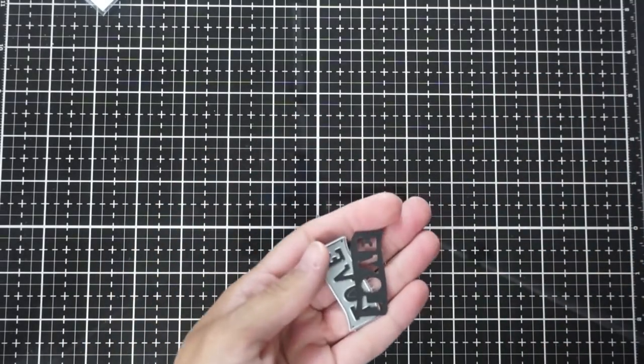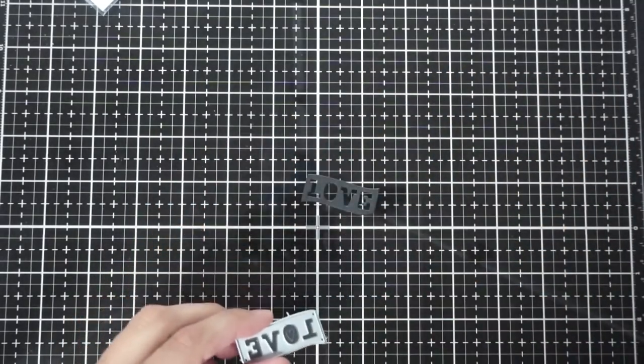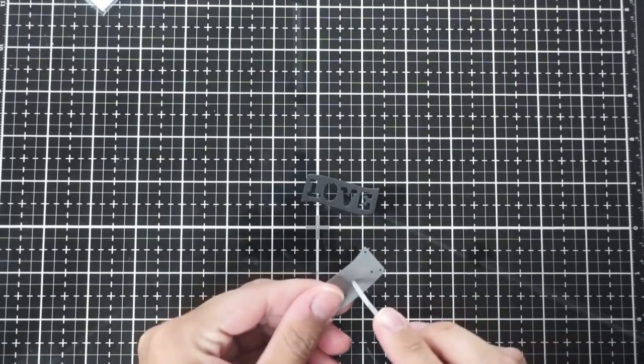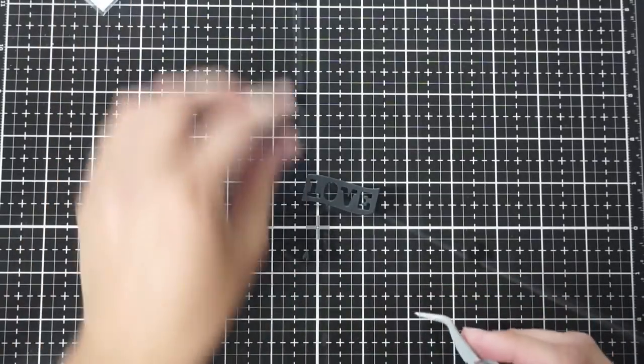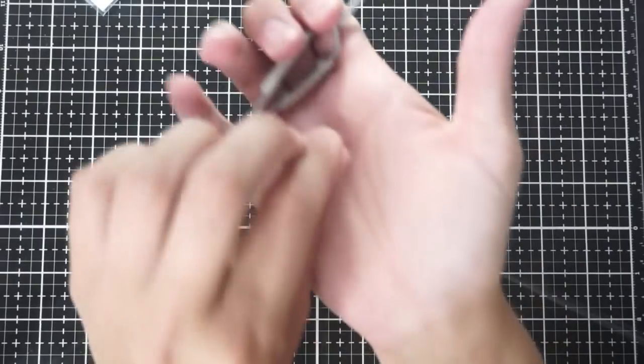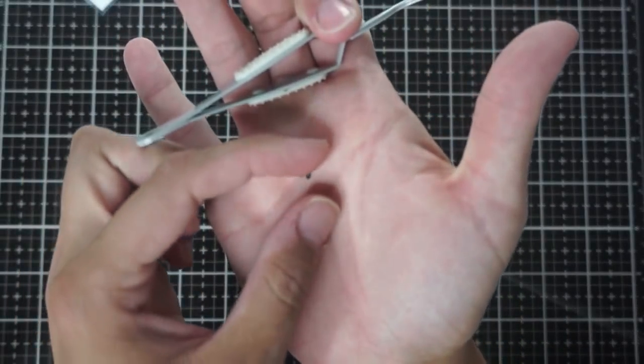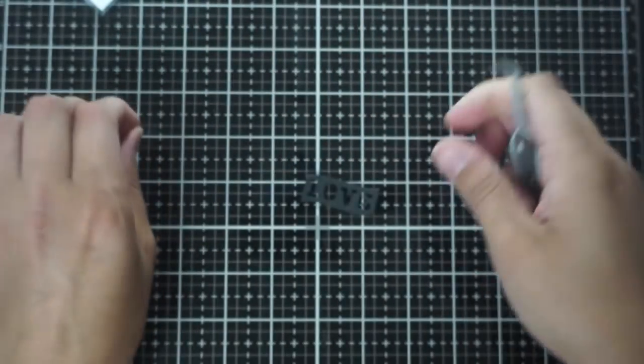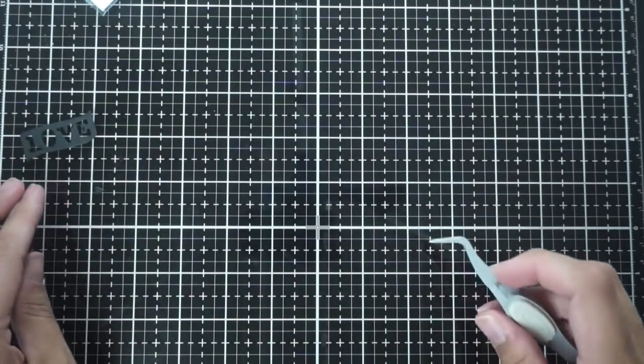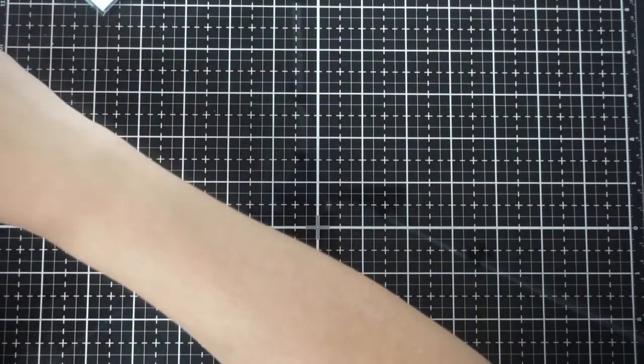I went ahead and used this love die which cuts out this banner that says love in it and I'm going to take the center portion of the O which is this tiny little black heart so that I can put it in the center of the O when I adhere it onto the Sunburst die which is where I plan to put it.